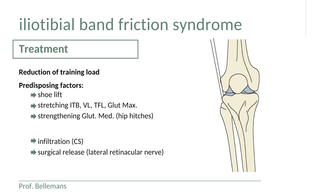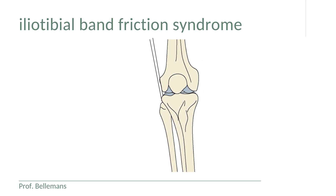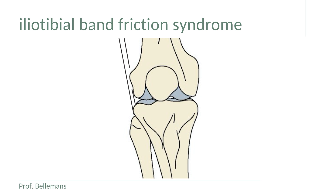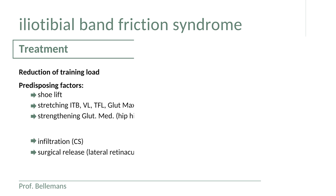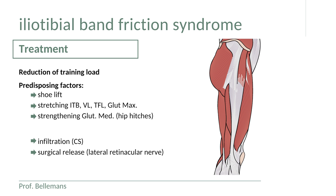If despite all treatment the patient continues to complain, surgery is an option. The procedure is a surgical release of the ITB, involving debridement of damaged tissue and scar tissue together with lengthening of the ITB. This relieves the tension, dissolves the friction, and also decompresses the lateral retinacular nerve — a small local nerve branch that gets squeezed during the friction process and is likely a major contributor to the pain. This procedure has a success rate of 85 to 90 percent in returning patients to sport symptom-free.